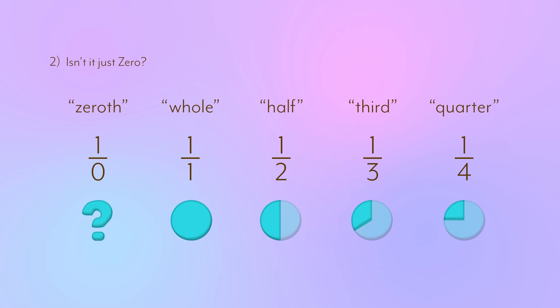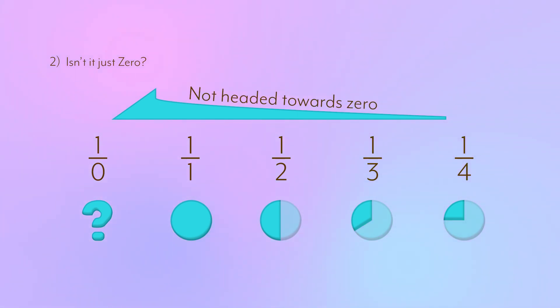So whatever a zeroeth is, this pattern would suggest that it's probably bigger than one, or at the very least, not zero. So unfortunately, that doesn't work. But it does lead well into our next attempt.